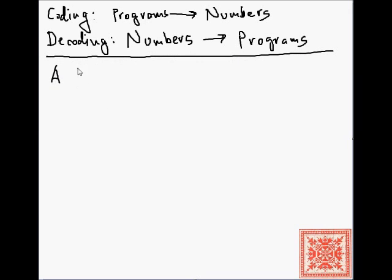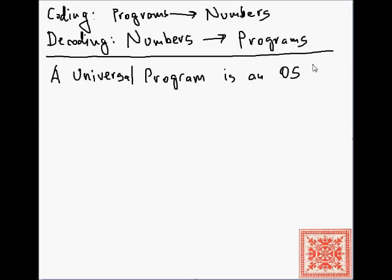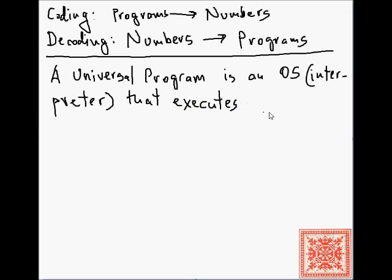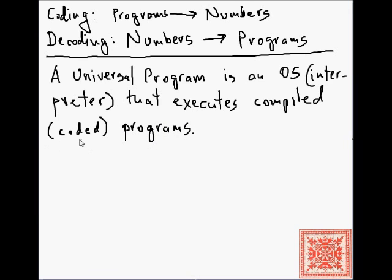A universal program in theoretical computer science is essentially the equivalent of a modern operating system or an interpreter — it's a program that takes other programs and executes them, specifically coded programs, i.e., programs that have been mapped into numbers. The modern equivalent of universal programs would be operating systems or interpreters, taking bytecodes or assembly codes and executing them on specific platforms.